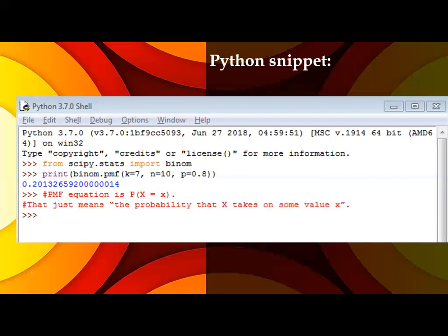Last time in normal distribution, we used the cumulative density function, which is the accumulation of all the probabilities for the given point from starting to end. But here we are expecting the result only for 7.